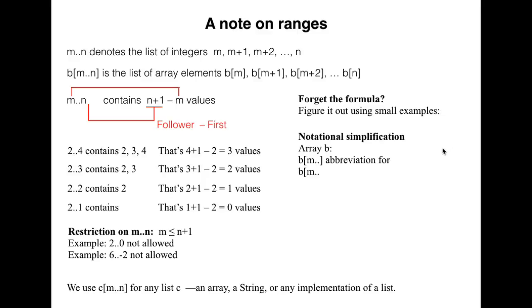Suppose b is a Java array. Then b[m..] is an abbreviation for b[m..b.length-1]. Similarly, for a string s, s[m..] is an abbreviation for s[m..s.length-1].